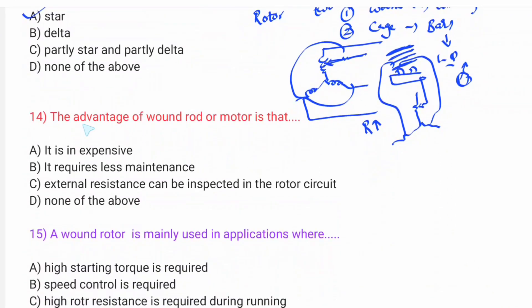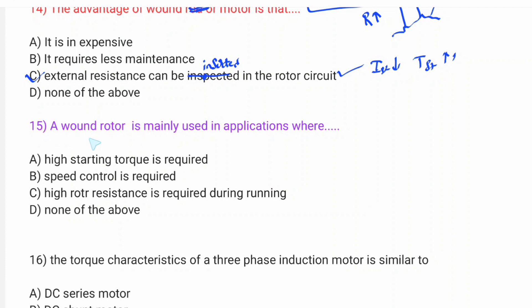The advantage of a wound rotor motor is that external resistance can be inserted in the rotor circuit. This external resistance changes the rotor circuit resistance, which increases the starting torque. The wound rotor motor is normally used in applications where high starting torque is required.